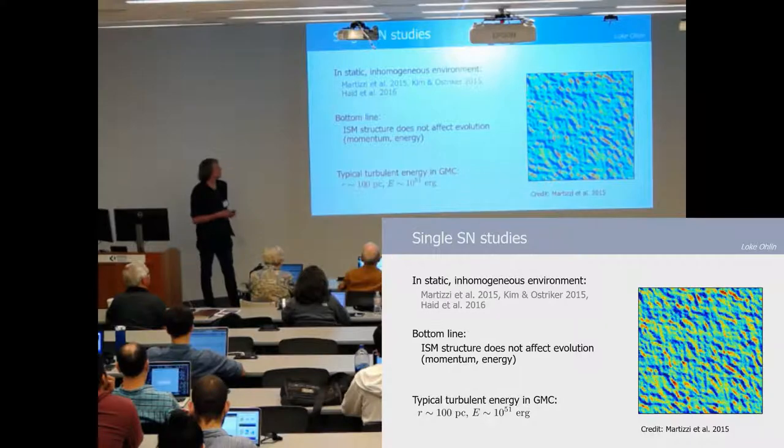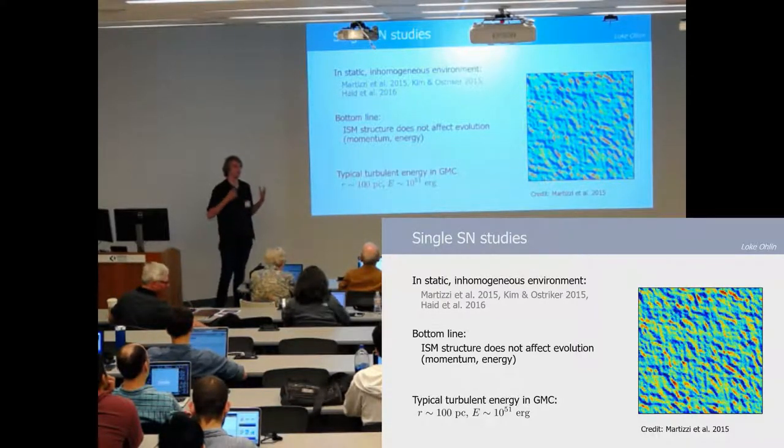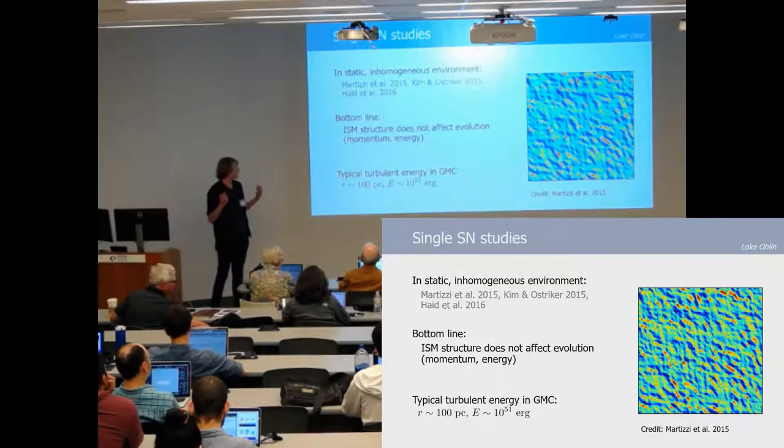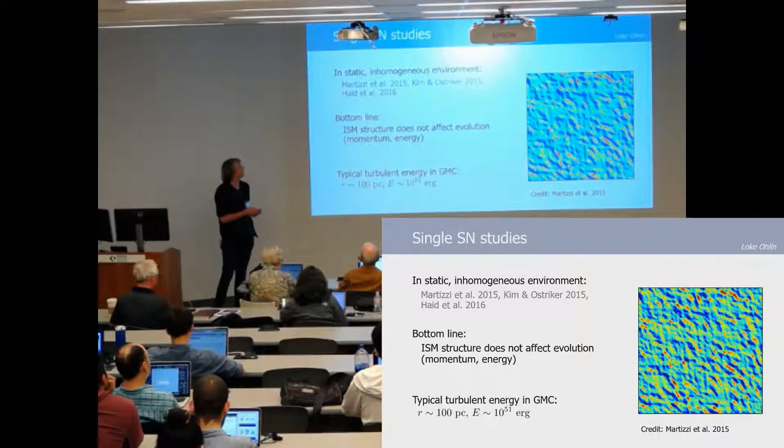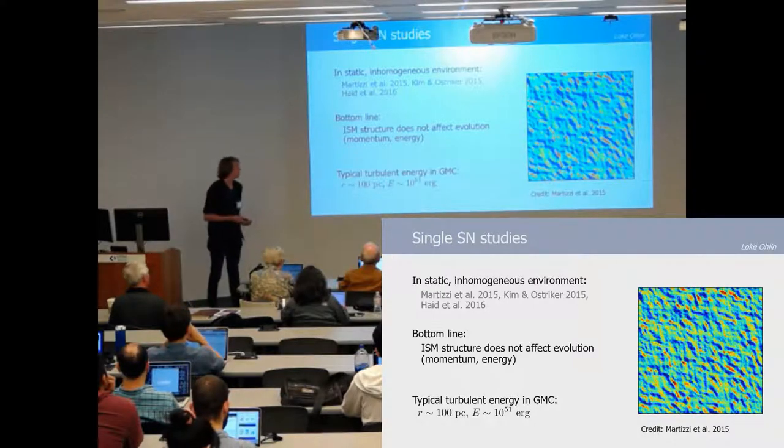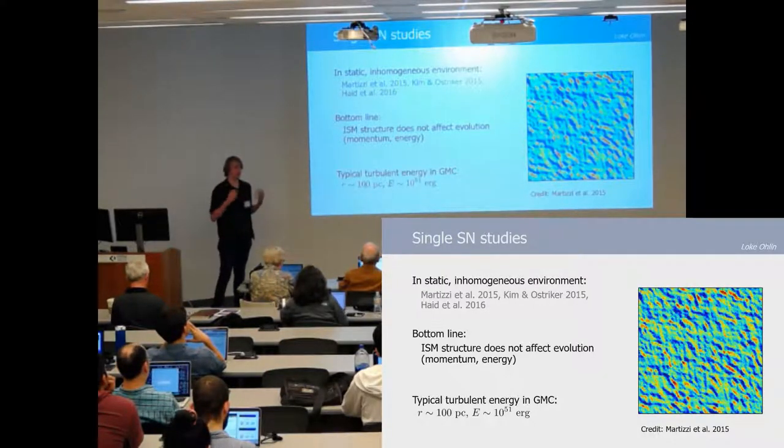They all generated inhomogeneous environments like this one from Martizzi et al., where you have high density structures surrounded by low density gas in which they detonate the supernova. What they generally found was that the ISM structure, the details of the higher density clumps, does not really affect the evolution. Rather it's the average properties such as the average density which is important.